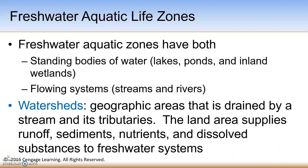Another type of aquatic life zone is freshwater aquatic life zones. These aquatic life zones have both standing bodies of water such as lakes, ponds, and inland wetlands, or flowing systems known as streams or rivers.